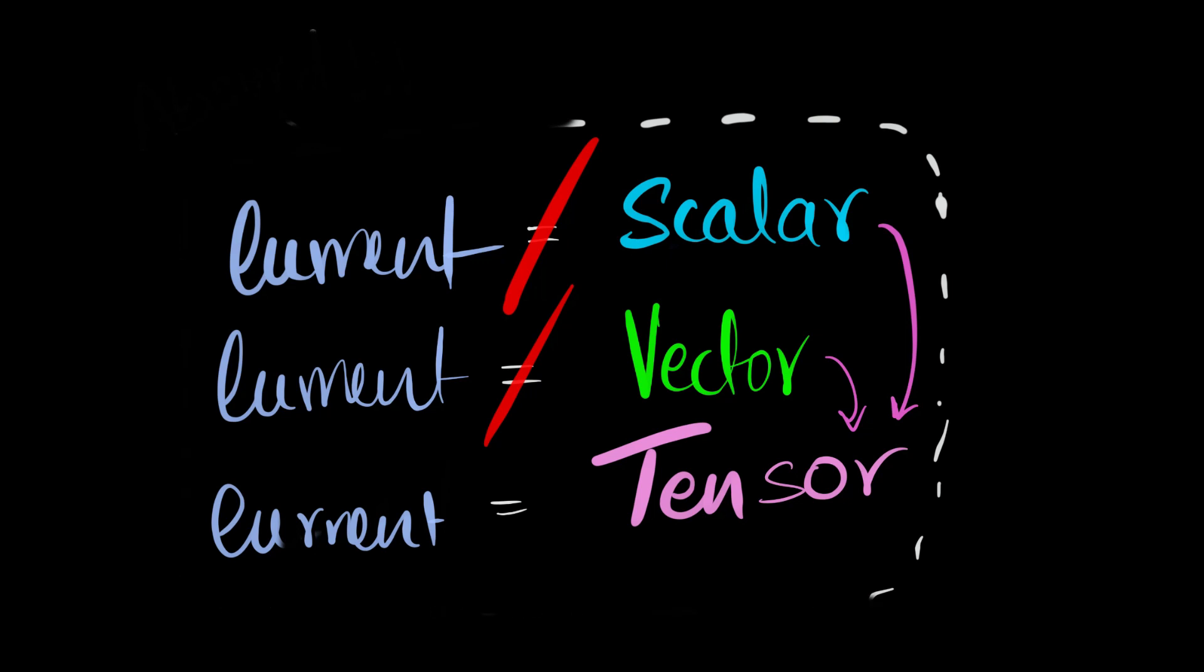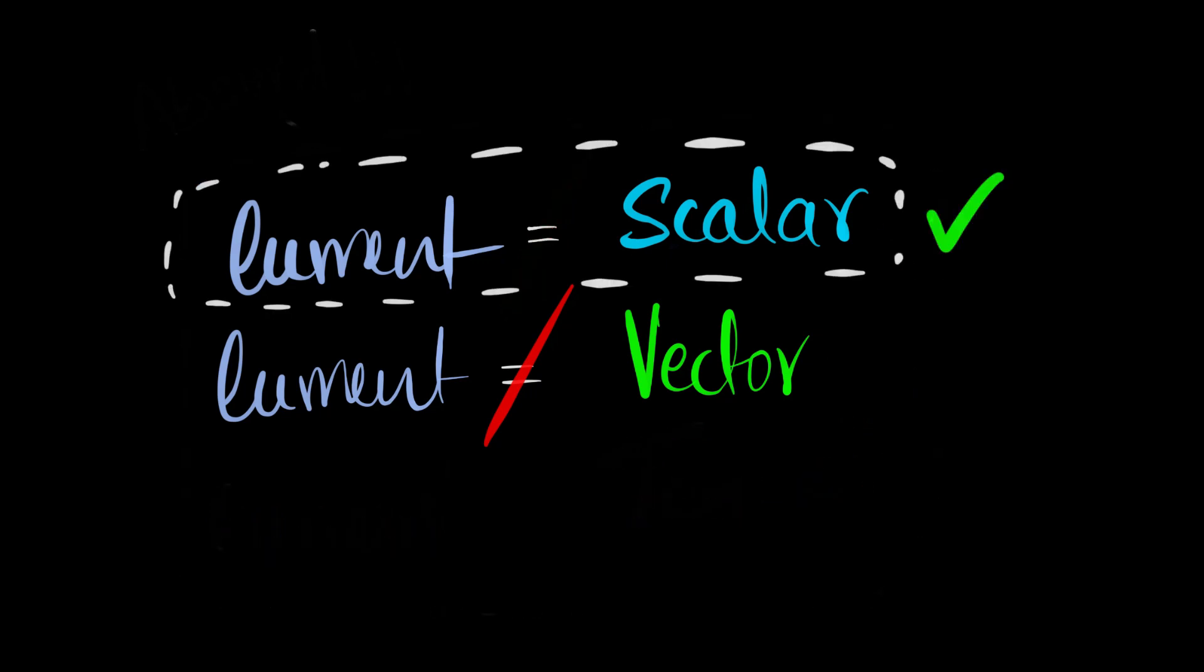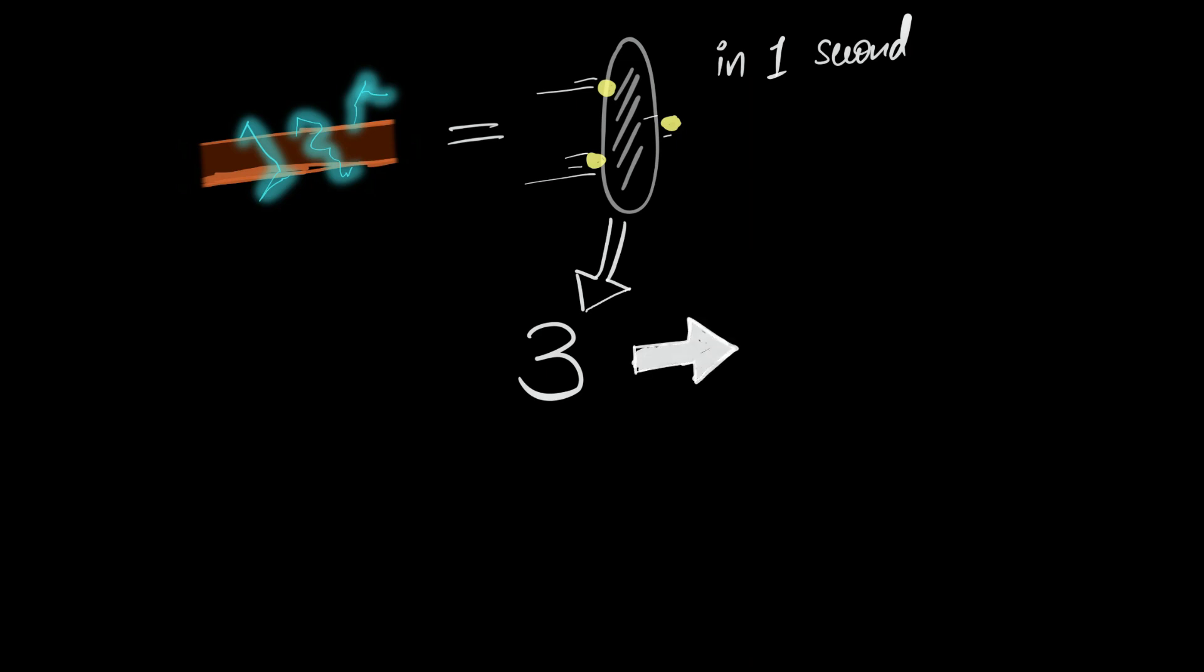So from what we've seen so far, current has to be just a plain old regular scalar quantity. But again, the problem is, it has a direction, or does it? Current is a measure of how many charges are flowing per second. And the answer to this question is a count. And count does not have a direction. And therefore current shouldn't be having any direction.